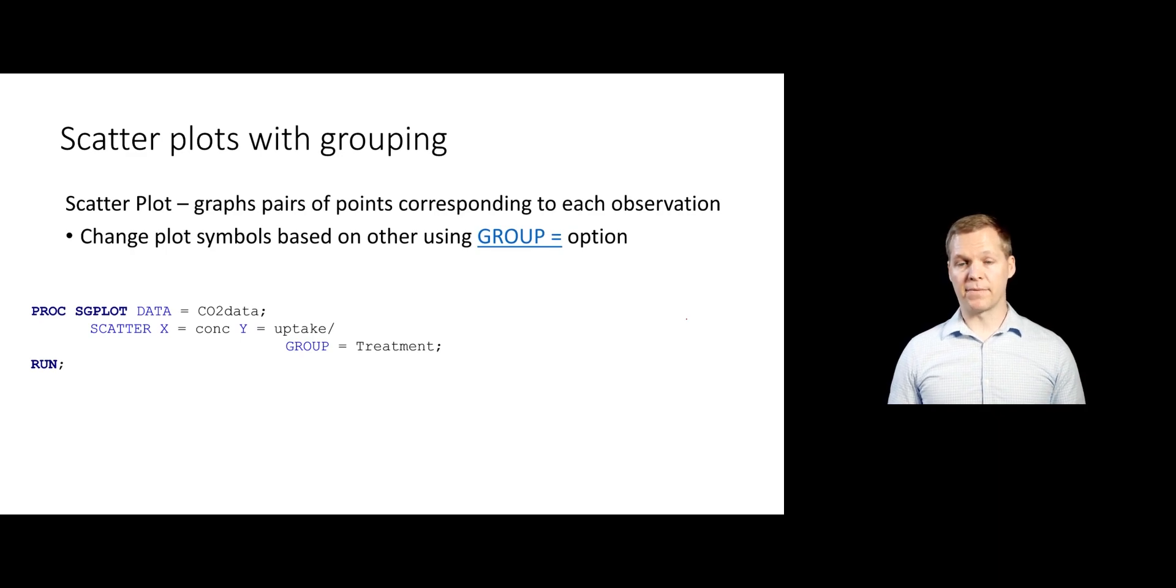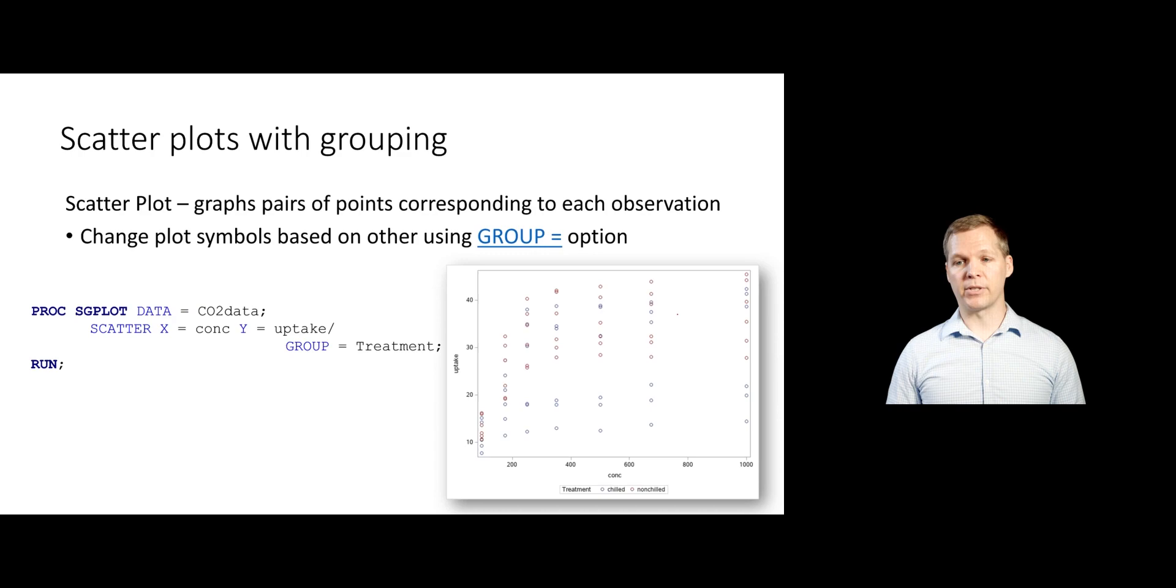You can also specify the coloring to be based off of a group. So we have these two different treatment groups, the chilled and non-chilled in this dataset. And so we can add a group equal treatment option here. And SAS is automatically going to color the points differently based off of which group they're in. And then also give you a little legend down here at the bottom to help understand what that plot is saying.